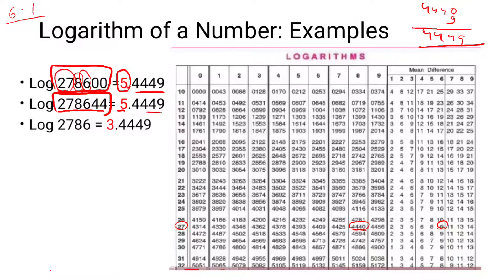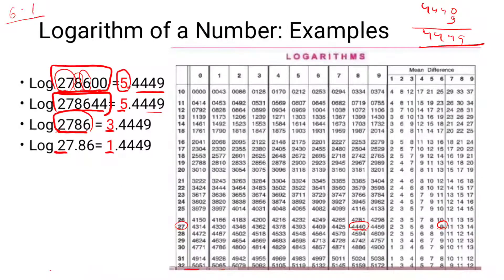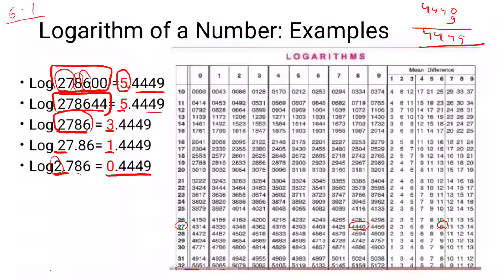For the next example, there are 4 digits, so the characteristic is 4 minus 1 equals 3. Take the first two digits, look them up in the log table, intersect with the third digit's column, then add the mean difference for the fourth digit. For example, with 2 digits the characteristic is 2 minus 1 equals 1. For 2.786, characteristic is 0. Look up 27 in row 8, find 4440, add the mean difference — do not look up 78 of 6, that would be wrong.